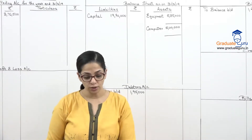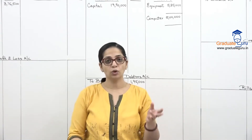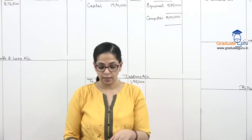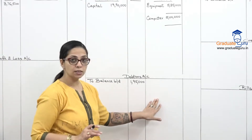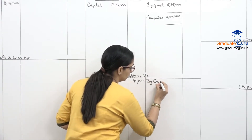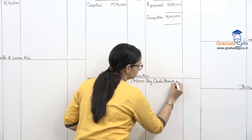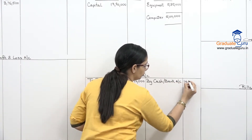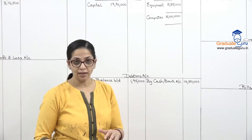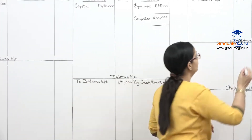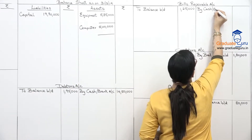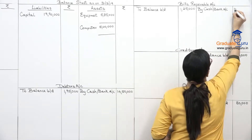Now for cash transactions, I need to give the second effect. On the receipt side, everything on the debit side gets its second effect on the credit side. We have to debtors — so in the debtors account I write 'by cash/bank account': fourteen lakh fifty thousand. Then bills receivable — credit side, by cash/bank: five lakhs.